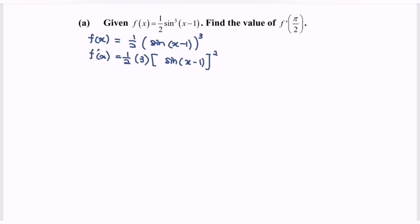Next, focus on the internal function — differentiate the sine, and we will have cos with the angle (x minus 1). Then focus on the inner function (x minus 1), differentiate, and we will have 1.